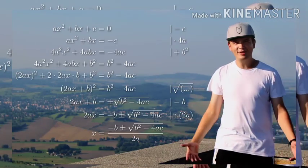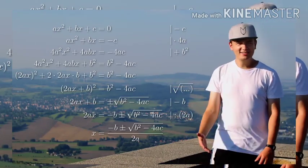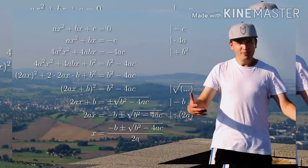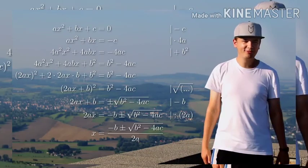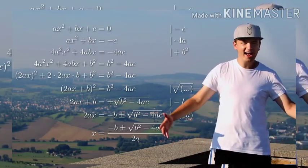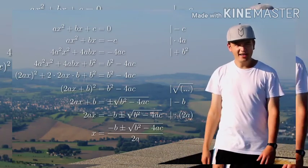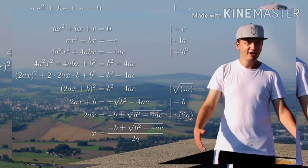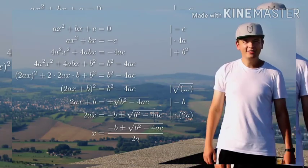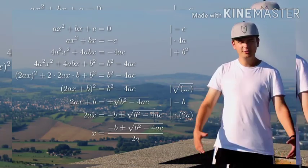Okay, and it's negative b plus or minus the square root of b squared minus 4ac over 2a. Negative b plus or minus the square root of b squared minus 4ac over 2a.